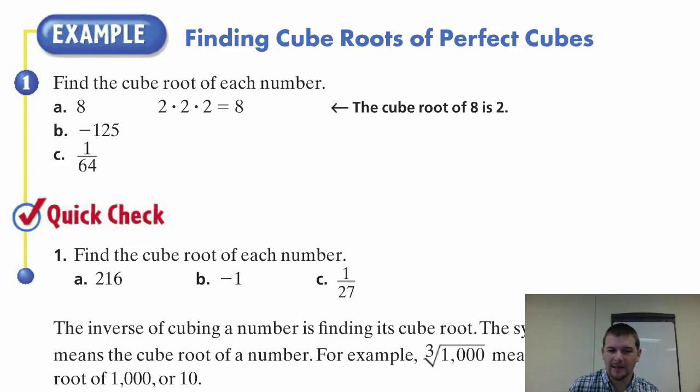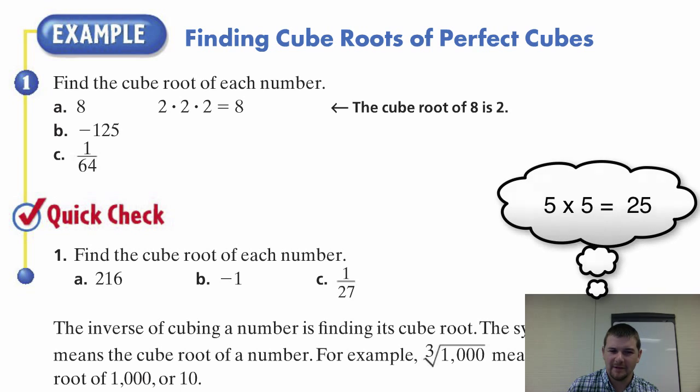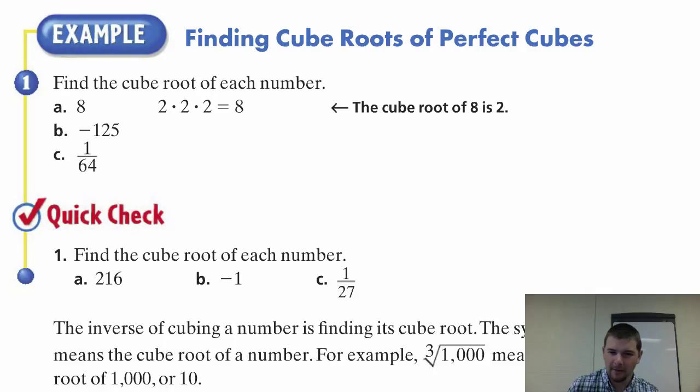Well, with a little work, we discover that's five. Five times five is 25, and 25 times five is 125. But recall, we're asked to find the cube root of negative 125. So, negative five. Negative five times negative five is positive 25, but then we multiply that positive 25 by negative five to get negative 125.